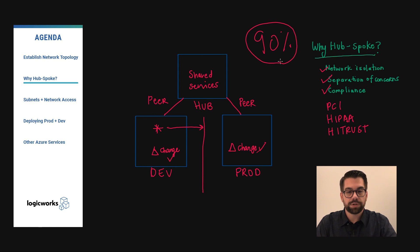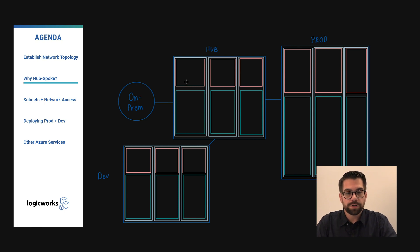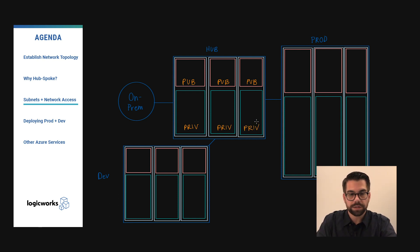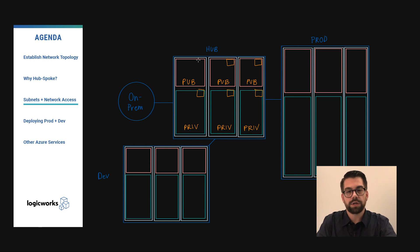Now that we have established our network topology and went over the benefits of the hub and spoke model, let's expand further. We need to establish the subnets within our virtual networks. The pink boxes here are our public subnets, and the green boxes here are our private subnets. In order to gate access, we are going to create network security groups and assign them to each of the subnets. This allows us to only allow common ports and protocols required by our application into the subnet.